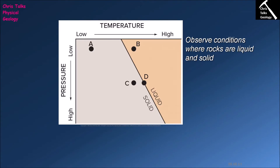The diagram in front of you shows the pressure and temperature conditions under which a rock will either be solid or liquid. On the diagram we have two variables: pressure and temperature. Temperature goes across the top — low on the left, high on the right. As we move down, pressure is increasing, so low pressure at the top and high pressure at the bottom. The diagram is split into two fields: a grey field where the rock will be solid and an orange field where the rock will be liquid. There is also a line down the centre called either the melting curve or the solidus, along which the rock will be a mixture of solid and liquid.